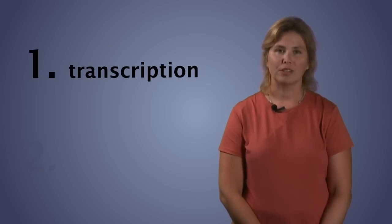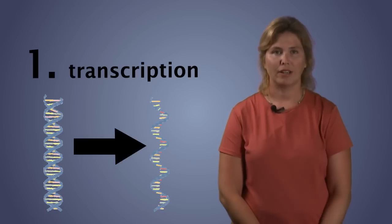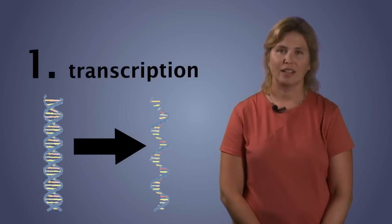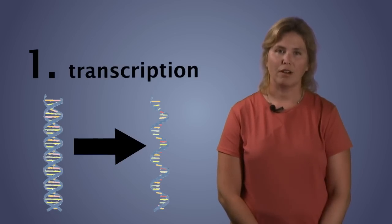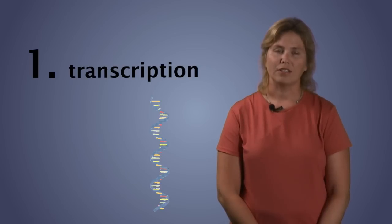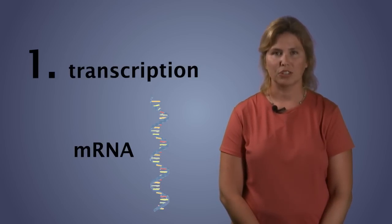During transcription, the gene is transcribed from DNA to RNA. RNA is a nucleic acid just like DNA, so the linear sequence of nucleotides in DNA can serve as a template for the RNA nucleotides. The product of transcription is an RNA copy of the gene, called messenger RNA.